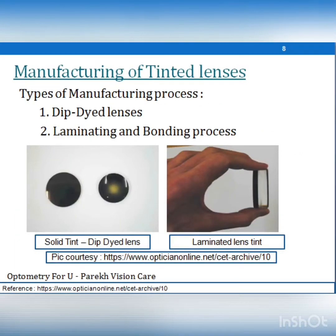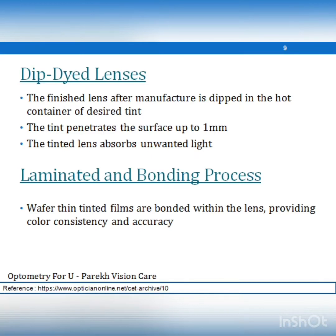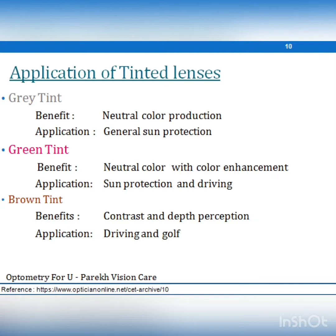Tinted lenses are manufactured by two processes: dipping and laminating/bonding. With low power lenses, the tint distributes evenly; with high power lenses, distribution is uneven. In the dipping process, the finished lens is placed in a dye at high temperature where the tint penetrates the surface by 1 mm and is evenly distributed. In laminating and bonding, tinting is done using paper-thin tinted films that are bonded and sandwiched within the lens.